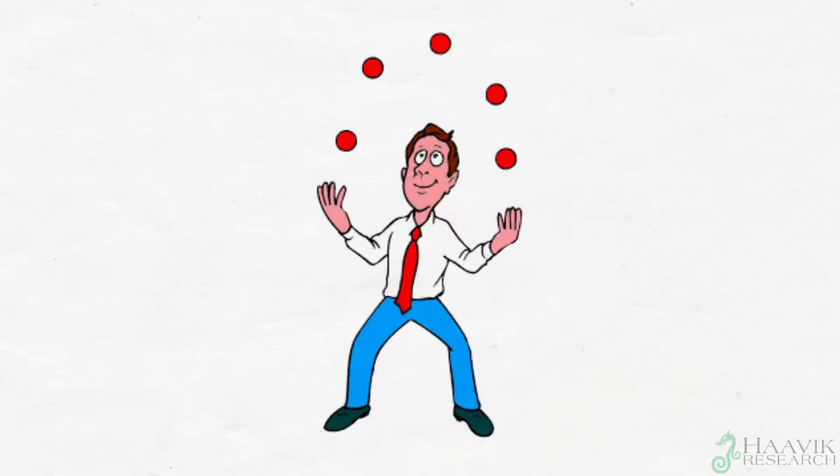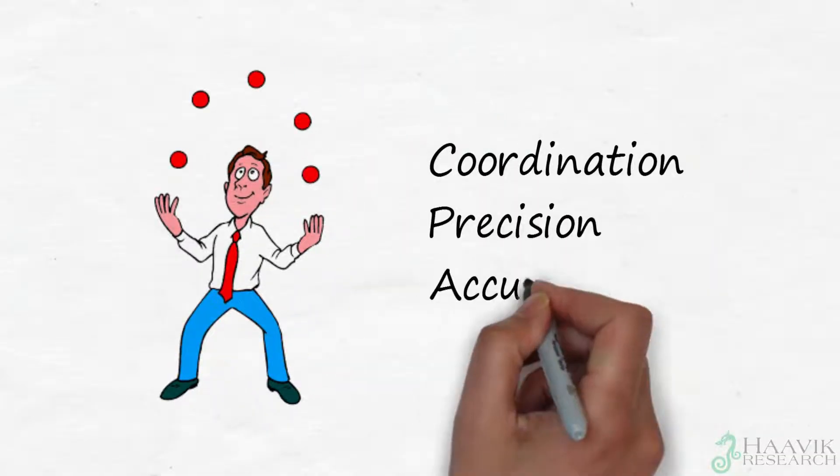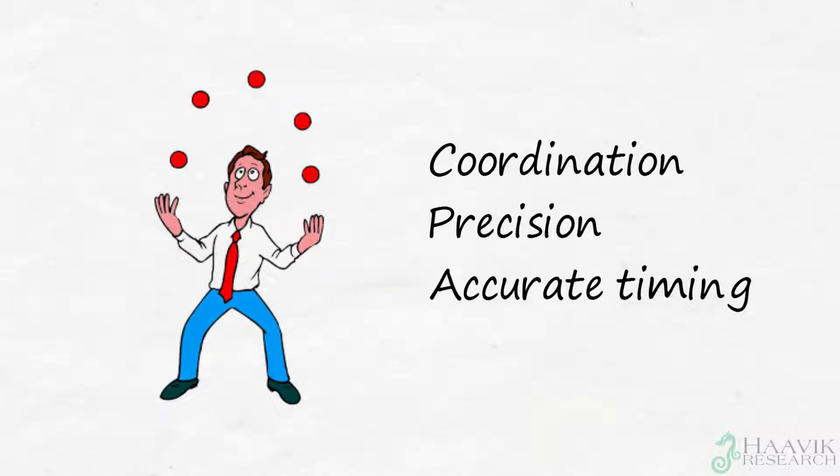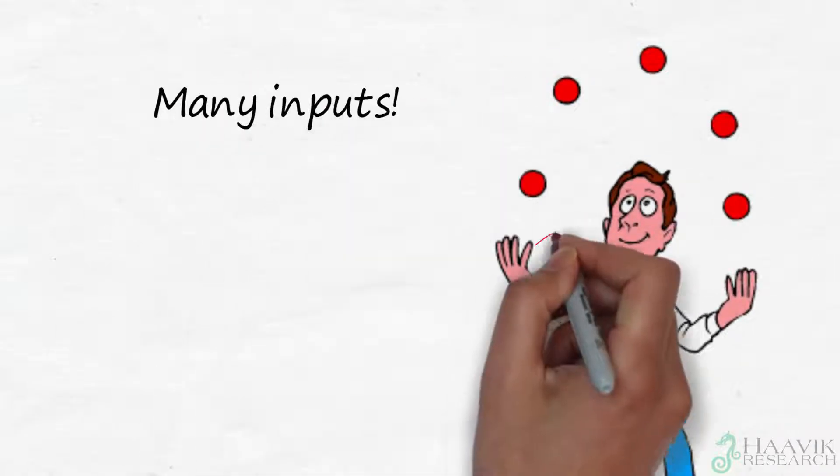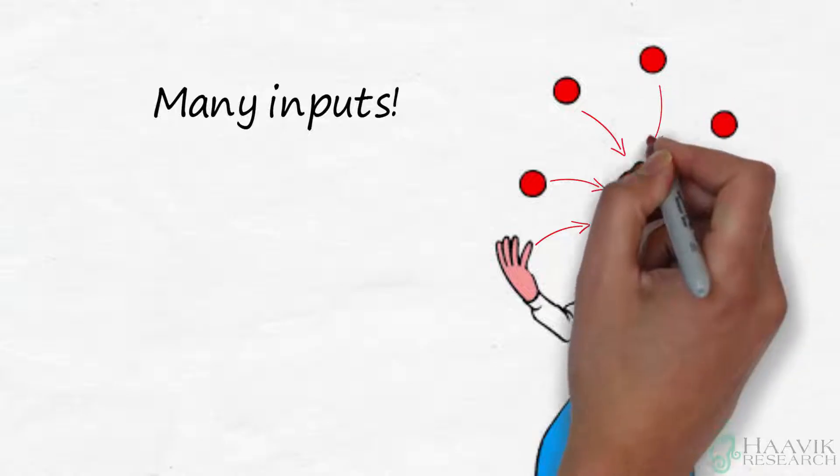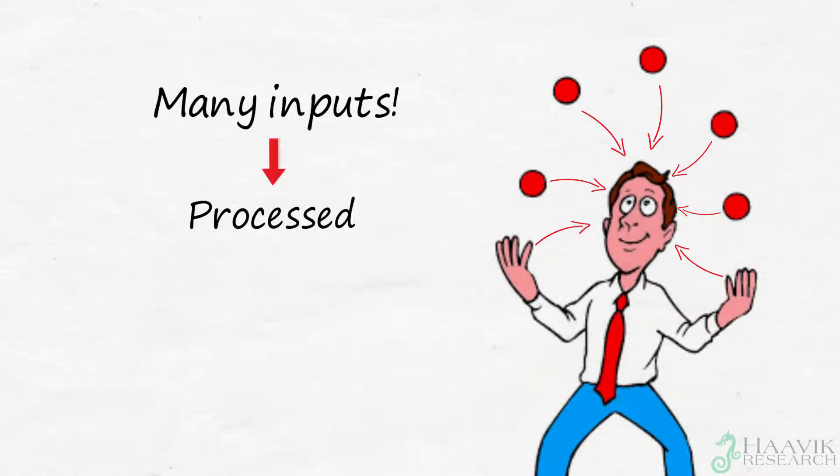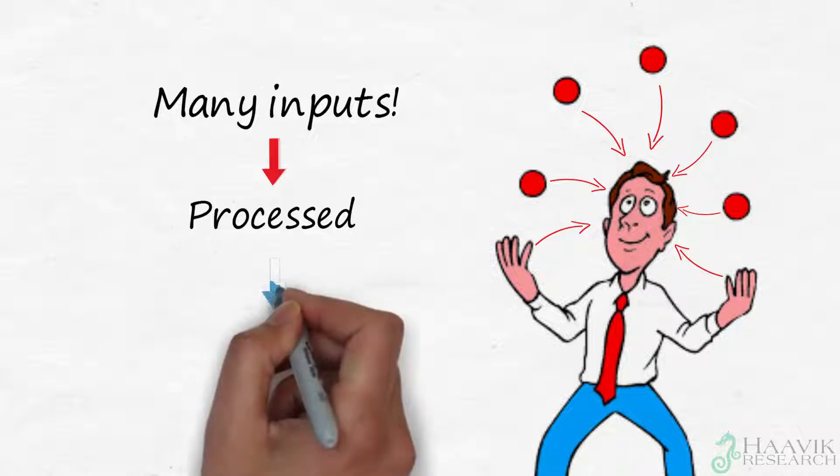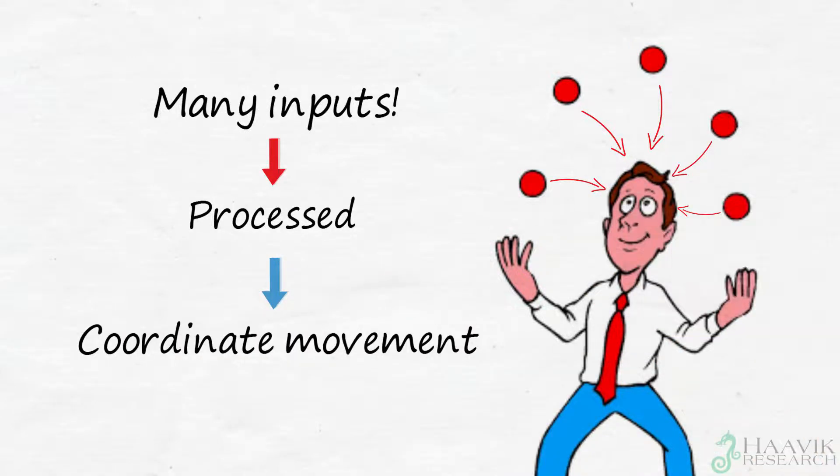The cerebellum does not initiate movement, but it contributes to the coordination, the precision and the accurate timing of your movements. It does this by comparing all the inputs it receives from the sensory systems of the brain and body and integrates and processes these inputs and then fine-tunes your movements so they are perfectly coordinated and timed so you are not clumsy.